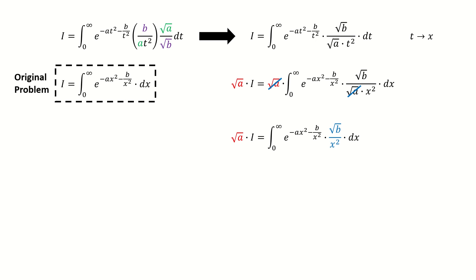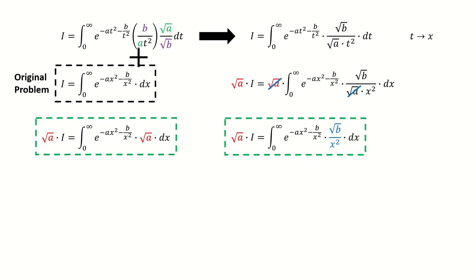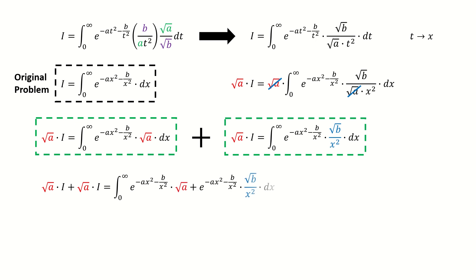Recall the original problem, which is here. Similarly, we multiply square root of a on both sides of this original problem, and we got here. Next, for these two equations, we just add them together, so we got here. And then we take this exponential function out, so we got here.